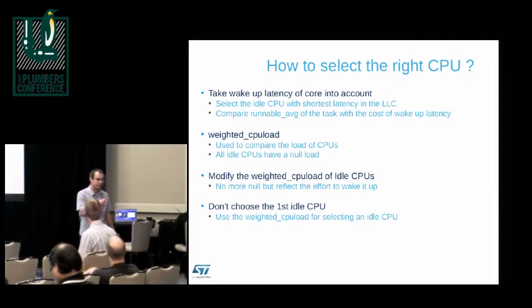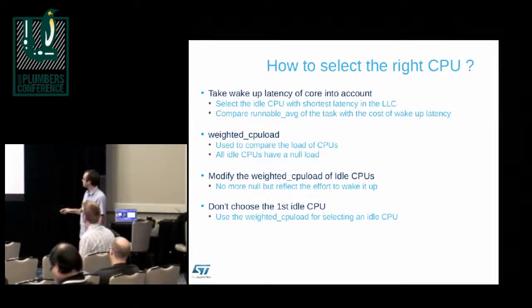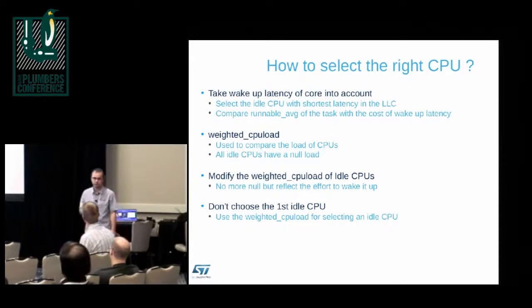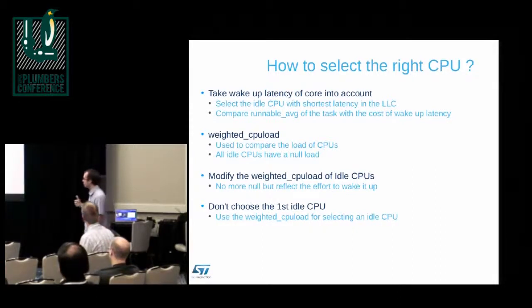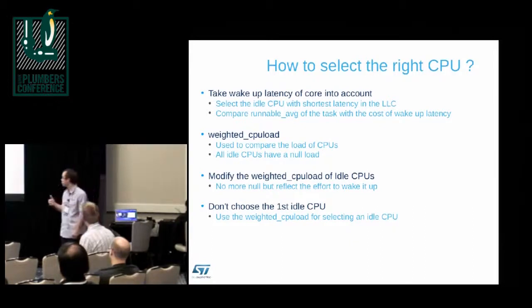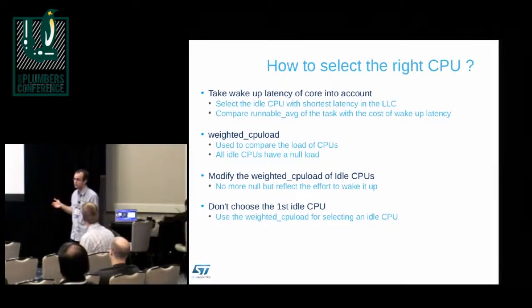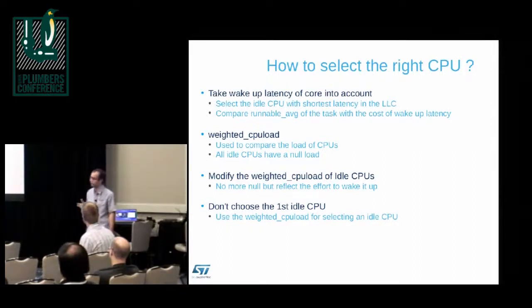Coming back on the discussion: right now we are choosing the first idle CPU in a CPU map just because we can't see any differences between CPUs. Instead of that, we should use the weighted CPU load when selecting an idle CPU, especially in the select_idle_sibling function.